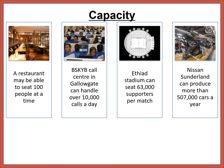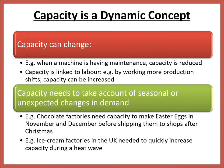For example, capacity for a restaurant may be able to seat 100 people at a time — they can't go any further than that. BSkyB's call centre in Gallowgate can handle over 10,000 calls per day. The Etihad Stadium can seat 63,000 supporters per match. And the Nissan plant in Sunderland can produce more than 507,000 cars per year. That's what we mean by capacity — how much a particular unit your company can actually produce over that time.